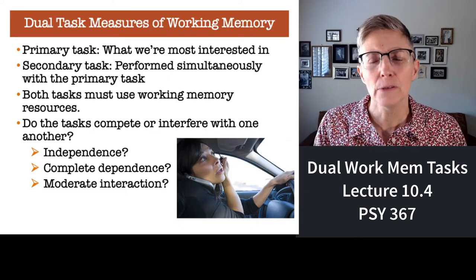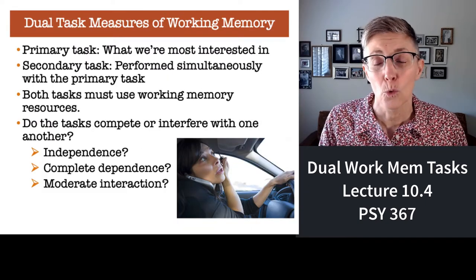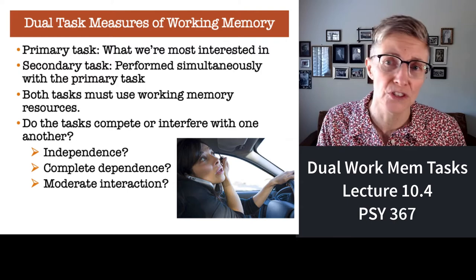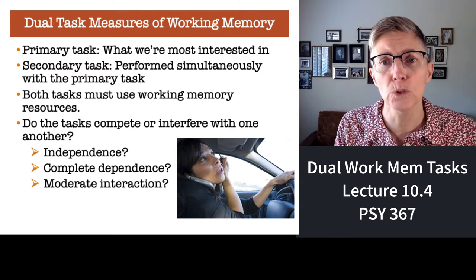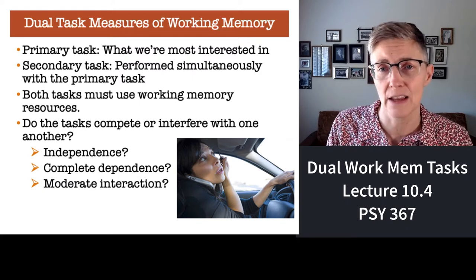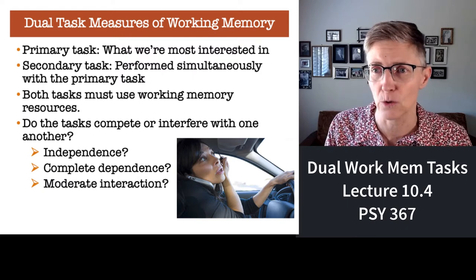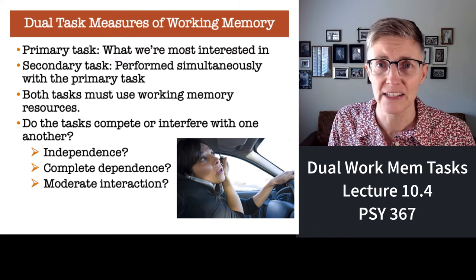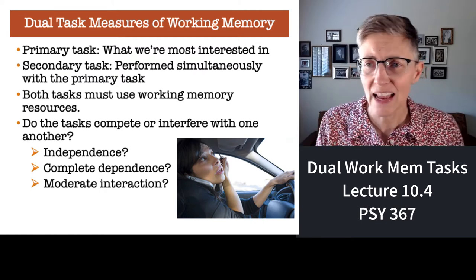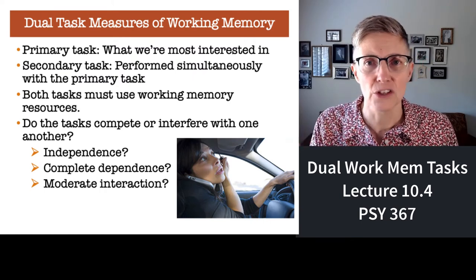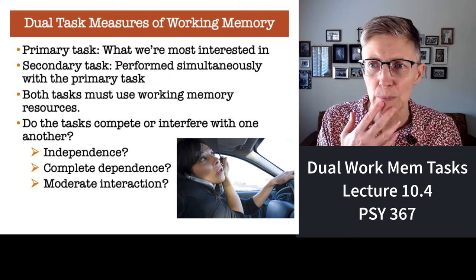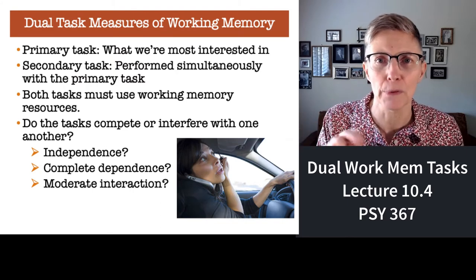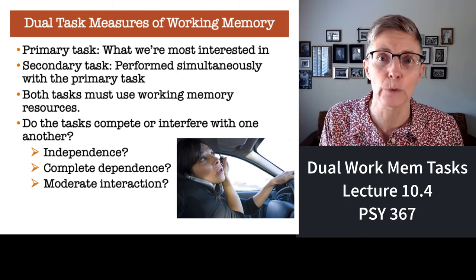Do different processes in working memory work independently of one another? Or are they completely codependent on one another, or something in between? Studies of dual task performance in working memory tasks have attempted to answer that question. In a dual task experiment, the primary task is what you're really interested in, and the secondary task is something additional that you have a person perform. Both the primary and secondary task have to require working memory.